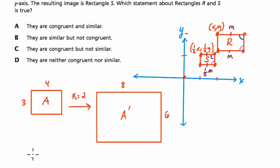the area is originally the area of A is 12. What's the area of A prime? Well, that's six times eight. That's 48. That's four times larger than 12.